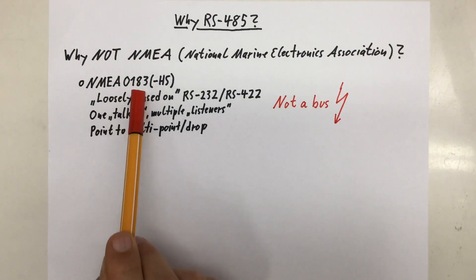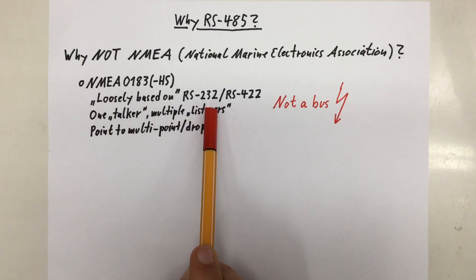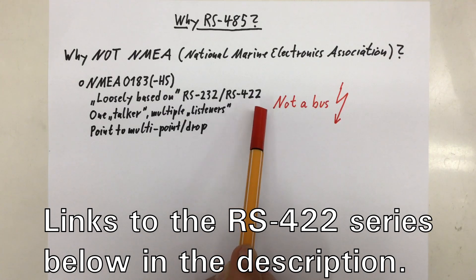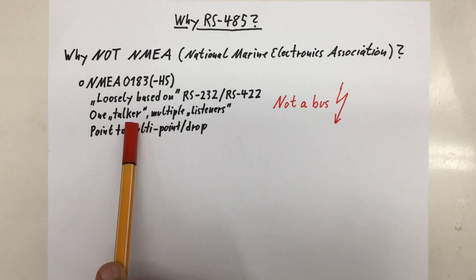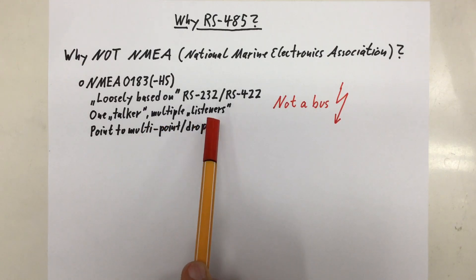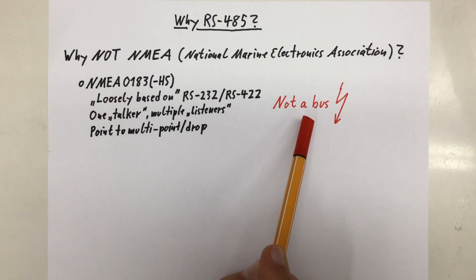First, we have the NMEA 0183 in its different versions and also in its high speed variant. These standards are, I'd say, loosely based on RS232 respectively RS422. And staying in the NMEA standard language, they have one talker and multiple listeners. So one transmitter and multiple receivers on a line. Or more general, they provide a point to multi-point respectively multi-drop connection. Meaning it's not a bus. So it's absolutely not suitable for our application.